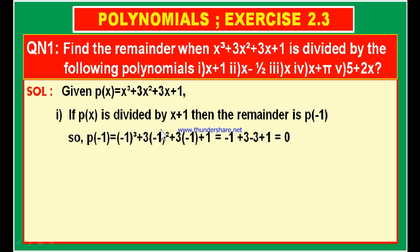Since we divided the given polynomial by x plus 1 and got remainder 0, we can call x plus 1 a factor of the given polynomial p of x. Just as 2 is a factor of 6 because dividing 6 by 2 gives remainder 0, similarly here, since the remainder is 0, x plus 1 is a factor of p of x.